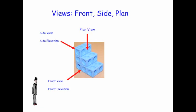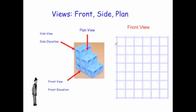Let's have a look at some questions. Here we have a grid and we've been given a shape and asked to draw the front view. When looking at this from the front, you would see a line going down, across, up, across, up, across, up and across like so.